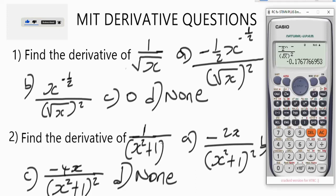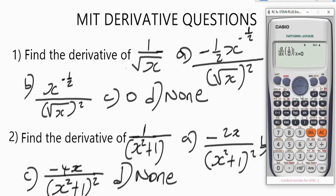Let's solve question two as well so you better understand the process. We need to find the derivative of 1 over (x² + 1). Bring up the derivative function by pressing Shift then the integral button. Enter 1 over bracket x squared plus 1, then close the bracket. Navigate to the stored value input point, set it to 2, and press equals. We get minus 0.16.